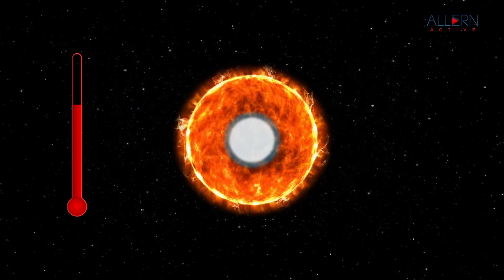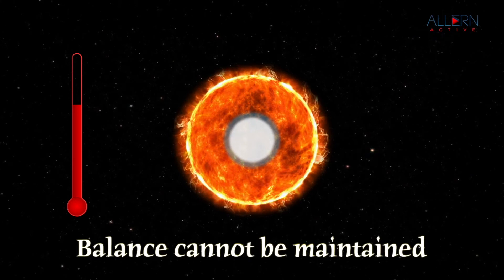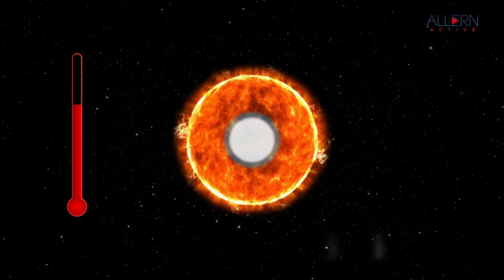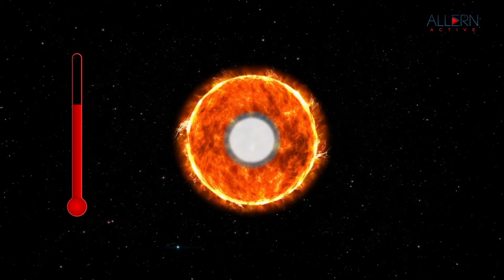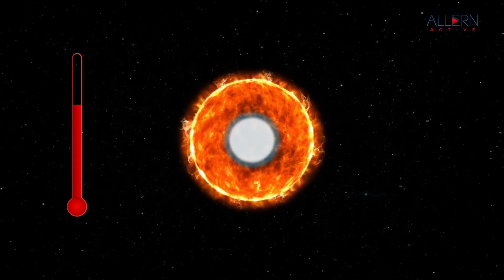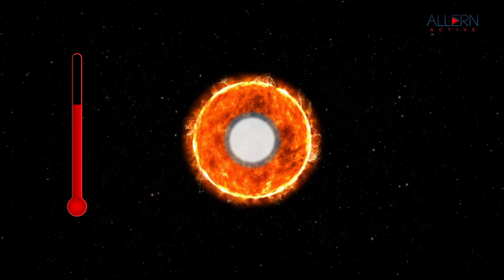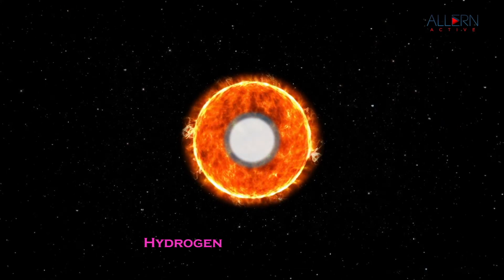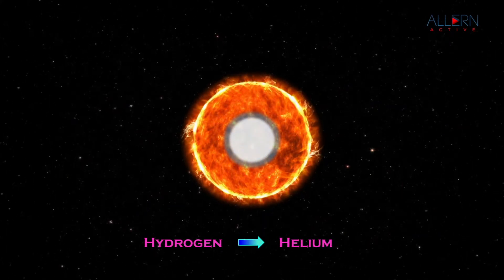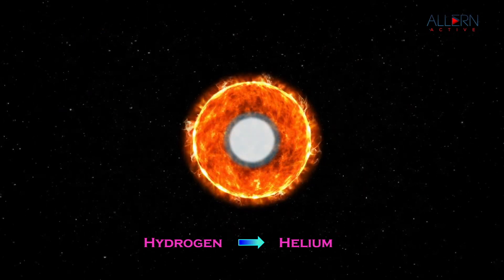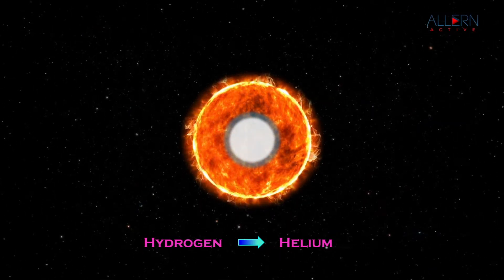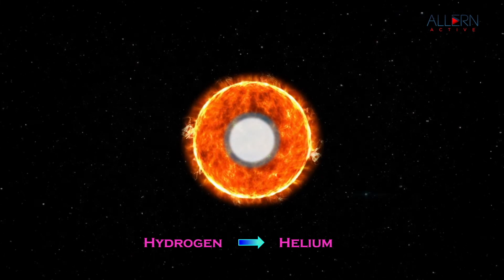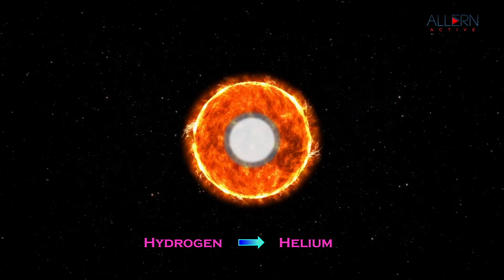Due to the decrease in temperature, the gas pressure decreases and the balance between gas pressure and the gravitational force cannot be maintained. As the gravitational force is now higher than the gas pressure, the star starts contracting. This causes another fuel to start burning — for example, when hydrogen at the center is finished, helium starts undergoing fusion and energy generation starts again. How many fuels will be used depends on the mass of the star; higher the mass, higher the number of fuels used.